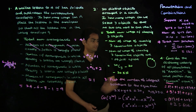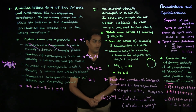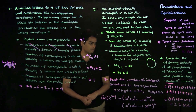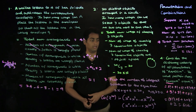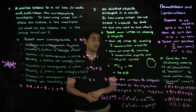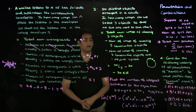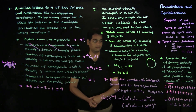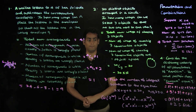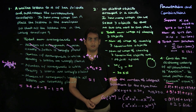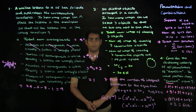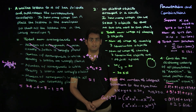Once again, we have seen an application of the theory of permutations and combinations, where we had to enumerate the different possibilities to arrive at the desired result. That is it for this lecture. It has been a pleasure teaching this chapter on permutations and combinations. I hope you enjoyed this lecture. Stay tuned for more lectures in this series. Thank you.